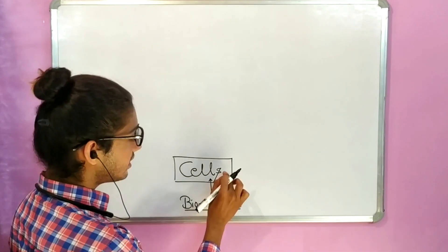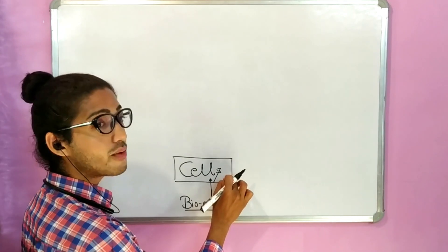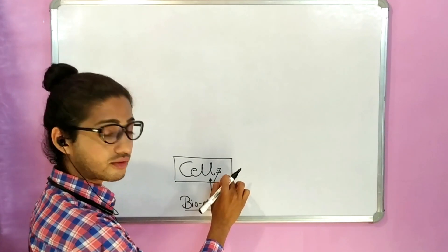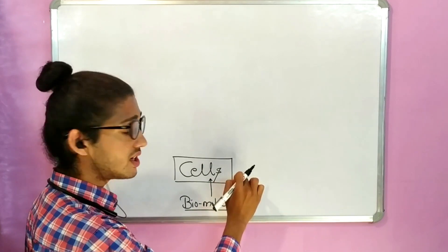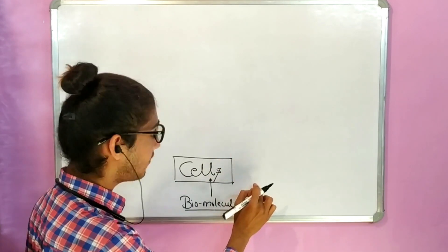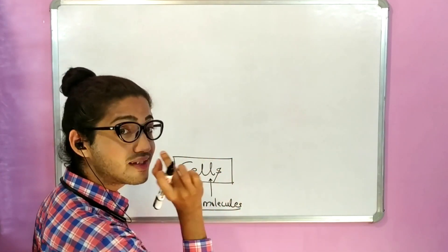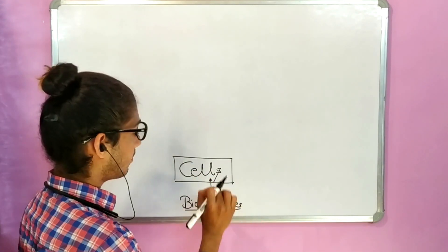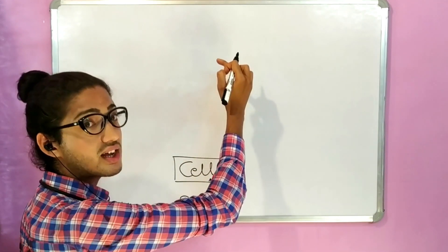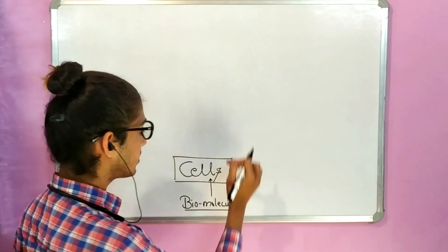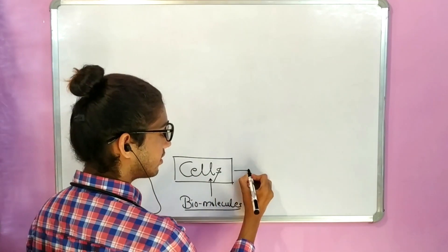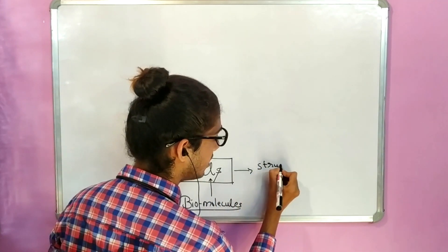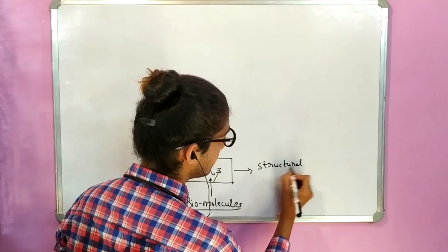This is where life begins. A cell is capable of renewing itself and dividing itself, that's why it's the basic structural unit. Beyond this, other levels are higher levels.